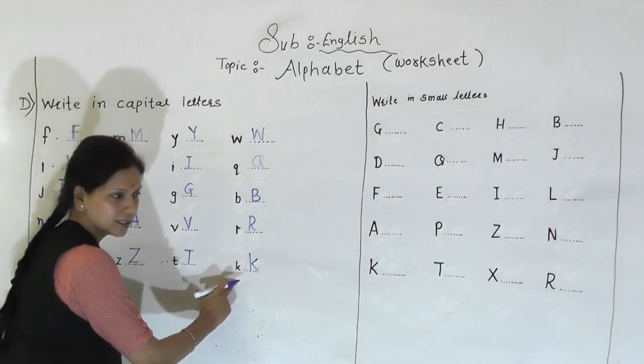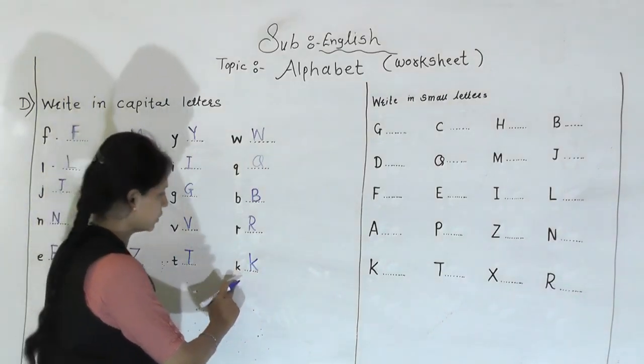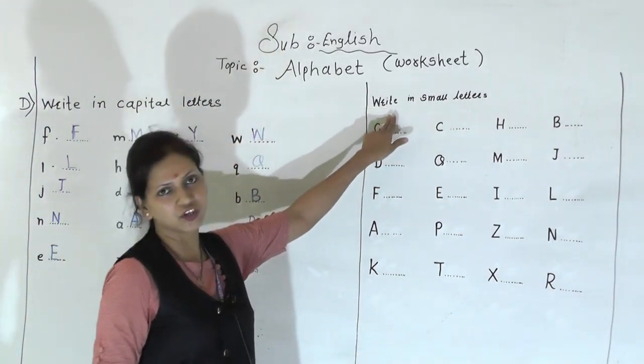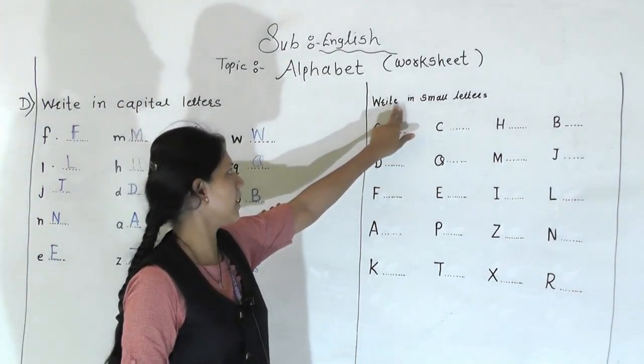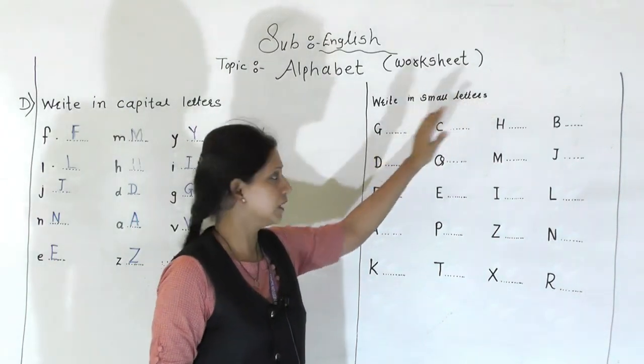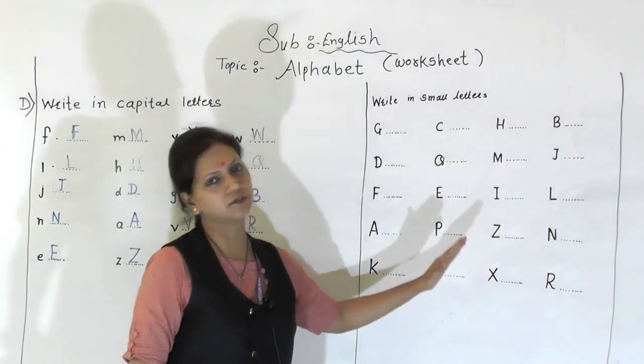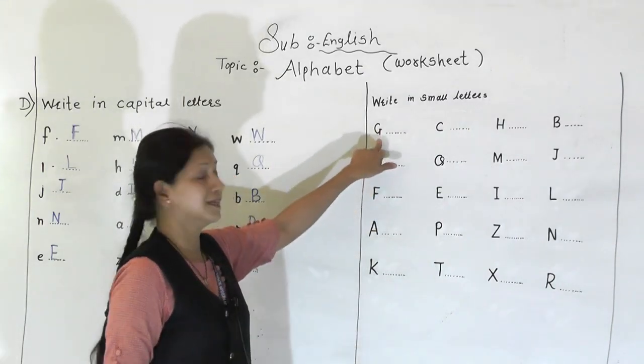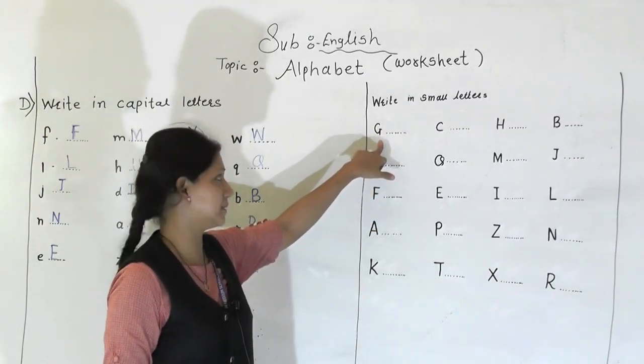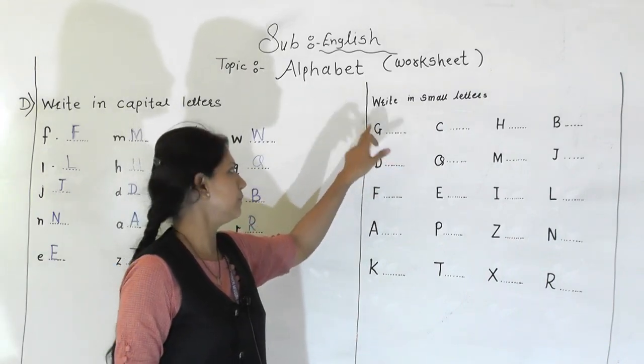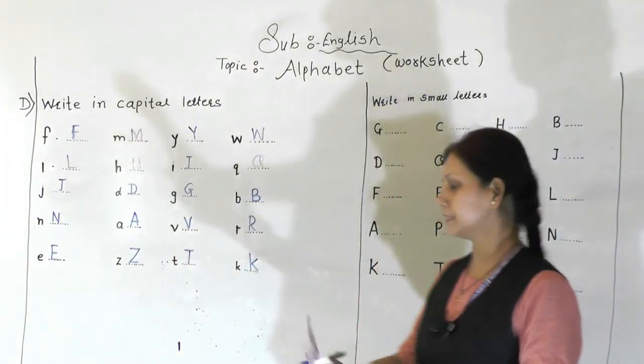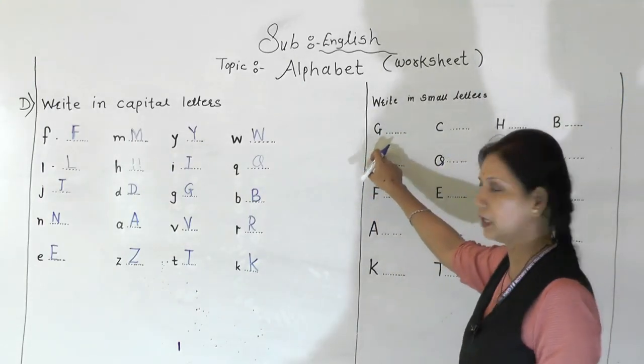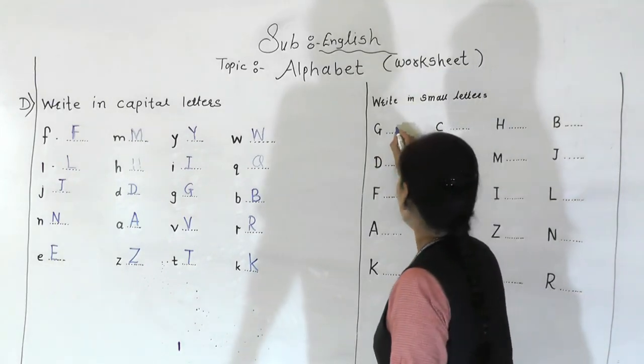Now we will move towards the small letters. The instruction is write in small letters. So these are the capital letters and you have to convert this into small letters. This is a capital G. As I told you, you have to use the phonic sound. So how to write in small letters? Small G.